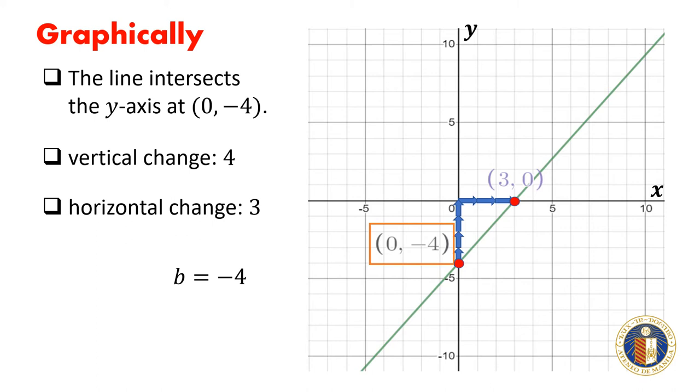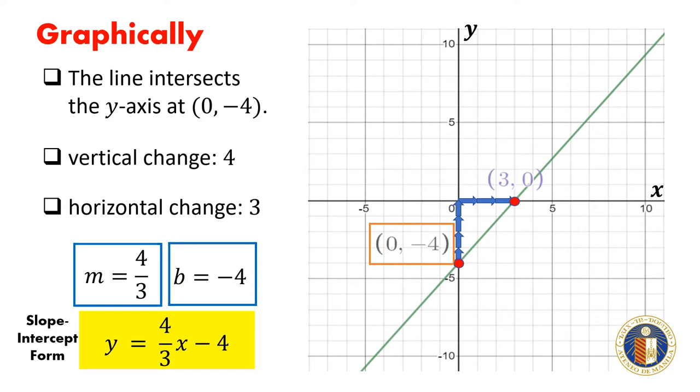This verifies that the slope is 4 thirds. Now we can determine the equation of the line in slope-intercept form. The equation of the line in slope-intercept form is y equals 4 thirds x minus 4.